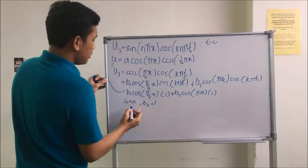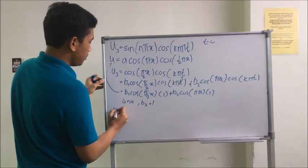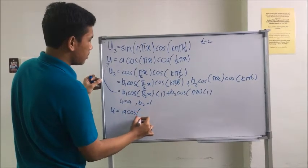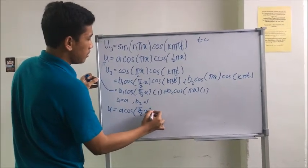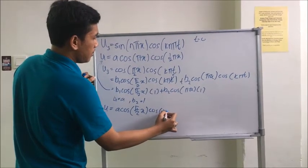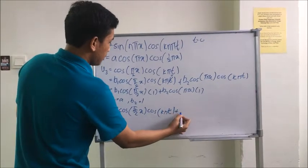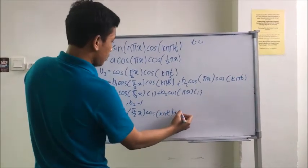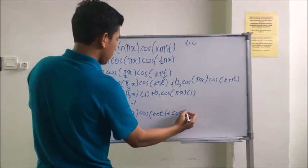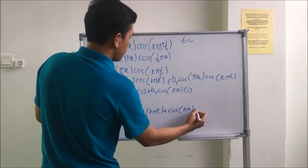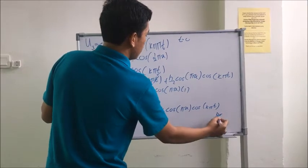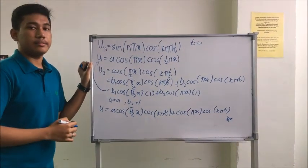So we just substitute b1 and b2 into the equation. U equals a cos 5 over 2x cos k pi t plus b2 equal to 1, so we can get cos pi x cos k pi t. So this is the last step. Thank you.